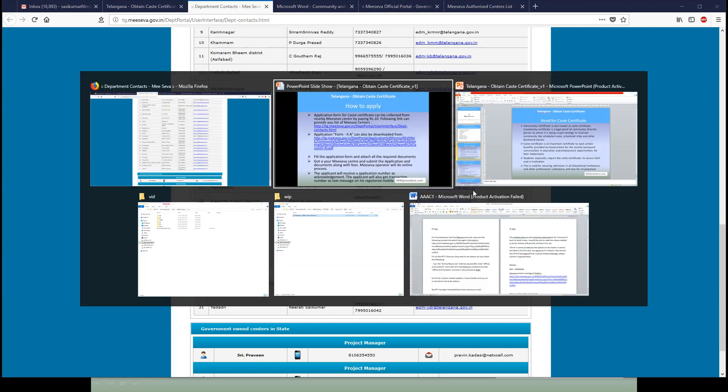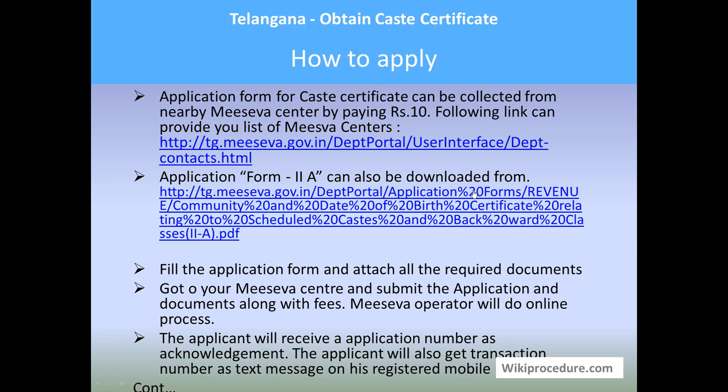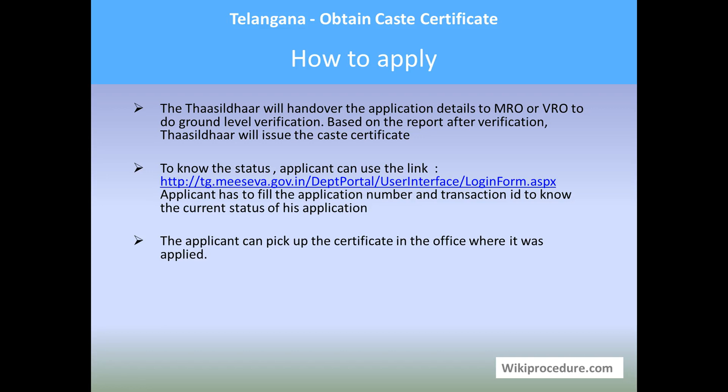The Tasildar will have access to updates on the clerk's work on the computer. The Tasildar will review the details provided by the applicant, then hand over the details to the MRO or VRO to do a ground-level verification of the applicant and submit a report. Based on this report, the Tasildar will decide to issue the caste certificate. In the meantime, if someone wants to know the status of their application, they can check using their application number.